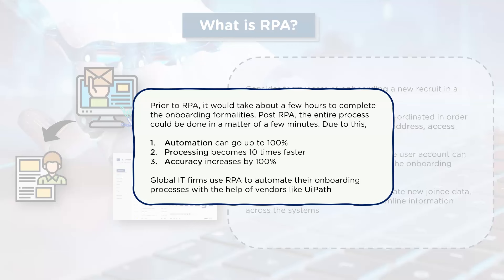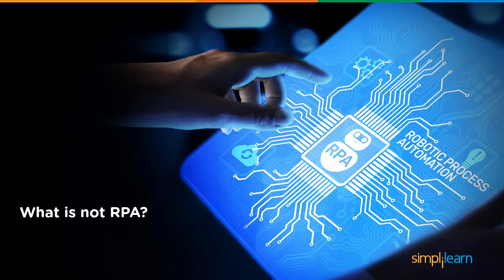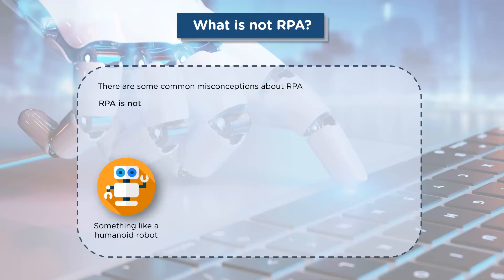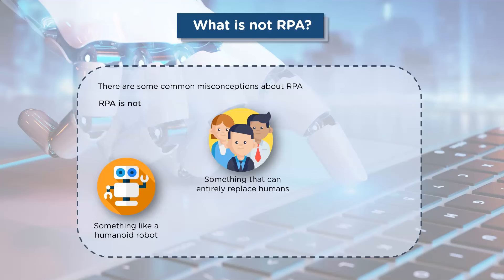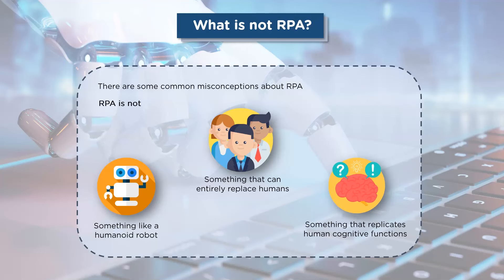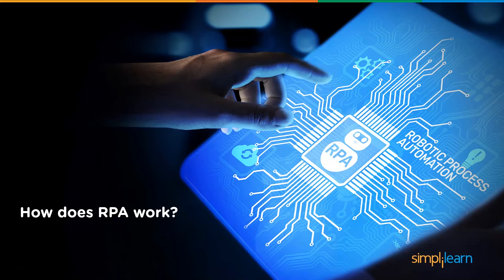When you hear the term 'robotic' in RPA, it's legitimate to assume it involves robots that perform human tasks. While this is partially true, there are certain misconceptions. RPA bots are not humanoid robots — they do not have a physical form like robots such as Sophia. These bots cannot entirely replace humans; they are still controlled and monitored by us. They do not possess human cognitive skills, lack logical thinking, and cannot make decisions on their own.